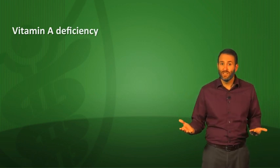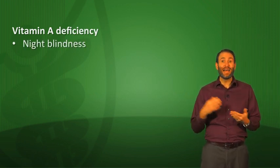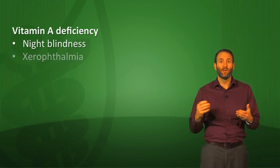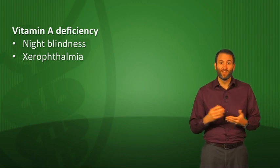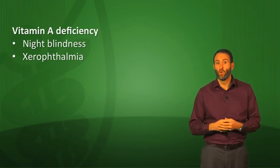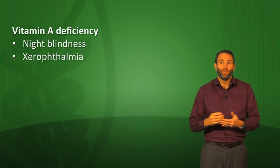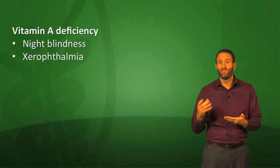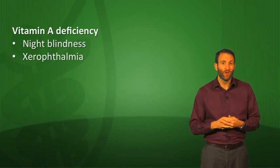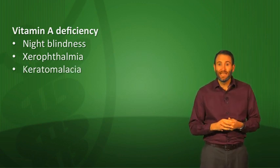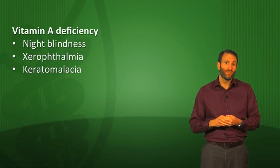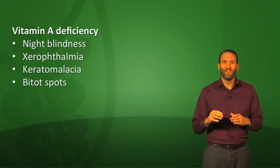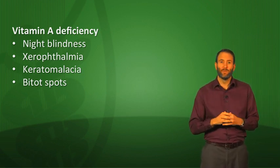Signs of vitamin A deficiency include night blindness, since vitamin A is very important in vision. You can have xerophthalmia — pathologic dryness of the conjunctiva and cornea resulting in corneal ulceration and even blindness. If you see corneal ulcerations on a test question, definitely think vitamin A deficiency. You can also have keratomalacia — wrinkling and clouding of the cornea — and Bitot spots, which are dry, silvery-gray plaques on the bulbar conjunctiva. A lot of eye findings with vitamin A deficiency.